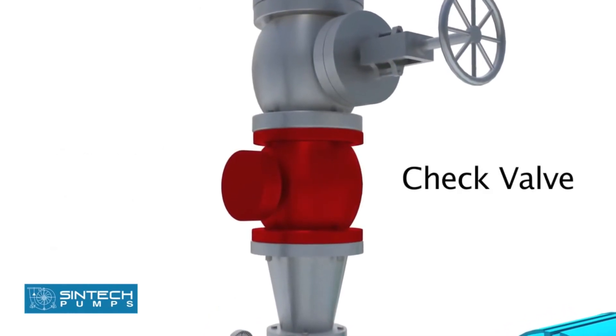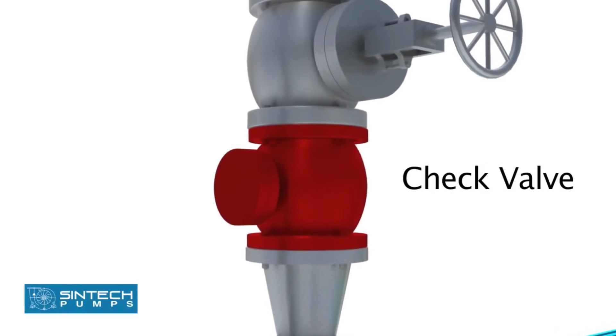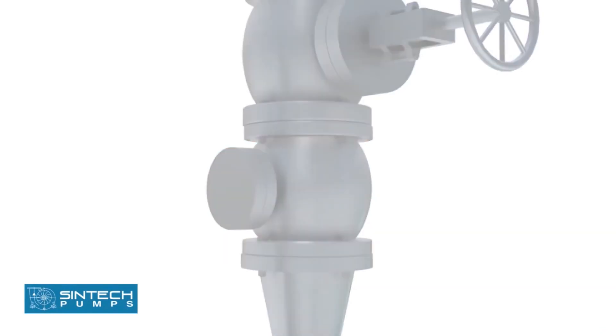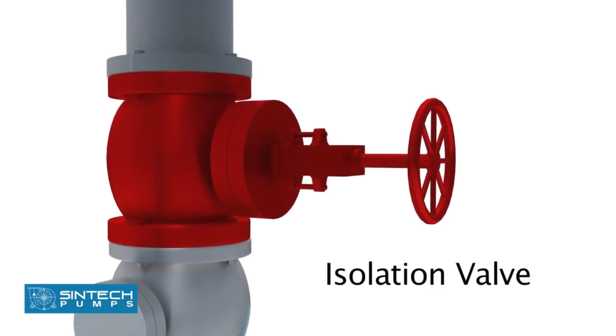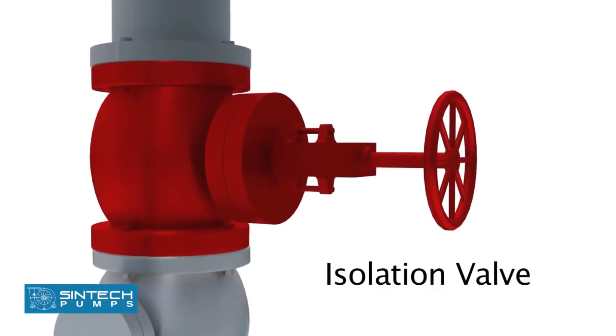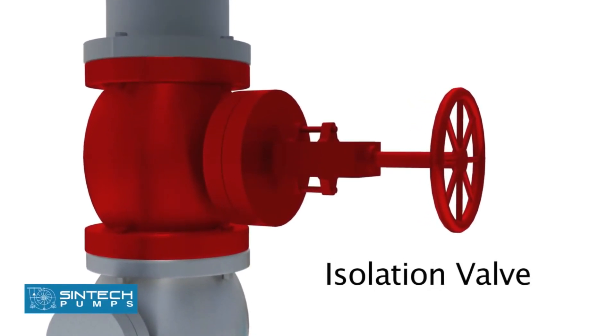The check valve used in the discharge should be of non-slam type to prevent hydraulic shocks. The isolation valve is provided downstream of the check valve so that these can be taken up for servicing whenever required.